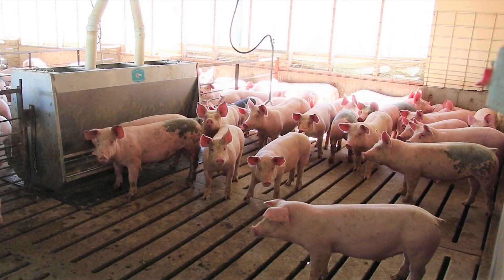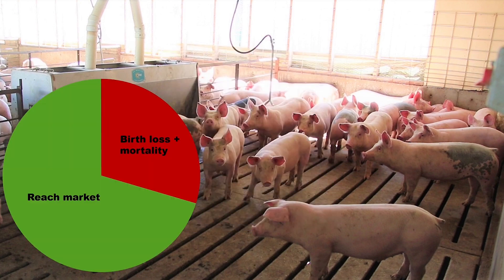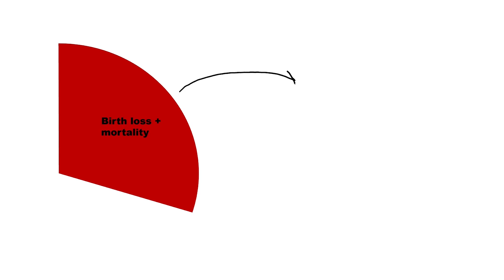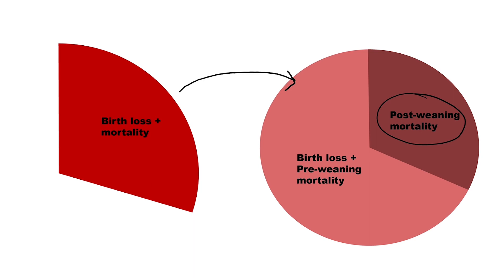Mortality results in significant economic inefficiencies in swine production, but more importantly, is an opportunity for producers to ensure that our animals are cared for in the best way possible. Of all pigs born, only about two-thirds of them survive until market — roughly one-third are lost prematurely, either during the process of birth or sometime throughout their life. About two-thirds of these losses occur at birth or prior to weaning, and one-third after weaning. This indicates that birth losses and pre-weaning mortality make up a large percentage of overall losses, but post-weaning mortality still represents an area with significant room for improvement.